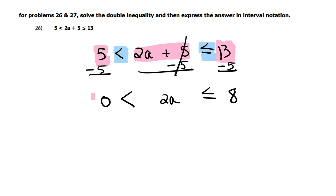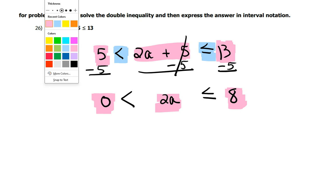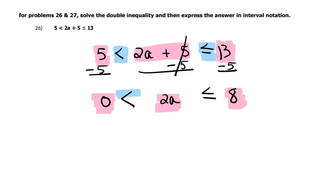So, keep in mind, you still have a left end and a right end and a middle, and they are separated by the less than and the less than or equal to sign. And now, I want to get rid of that 2. So, I think I'll use a different color this time. I'm going to divide by 2 because 2 over 2 would leave me with just A. But, if I divide the middle by 2, I have to divide each end by 2.